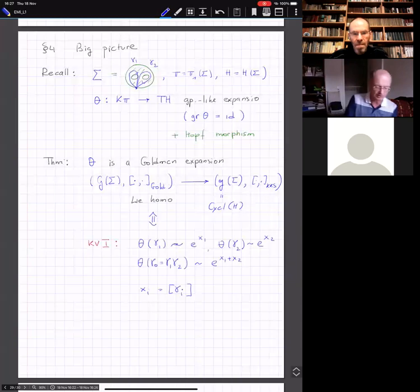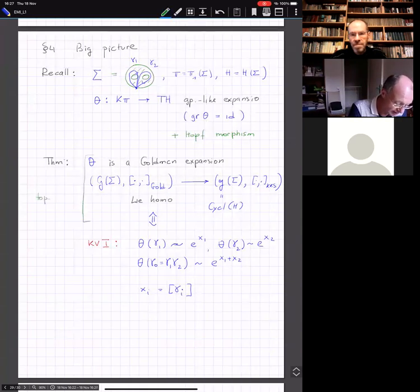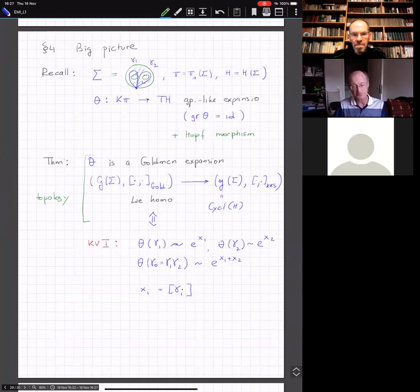If you just stare for a second at this statement, it connects two different fields. The first statement is a kind of topology statement. It operates with structures related to the fundamental group. There's this Lie bracket defined in terms of intersections of curves. It has some canonical associated graded object, that graded Lie algebra that we identified with something deriving from the KKS bracket.